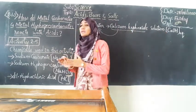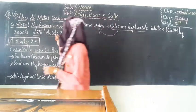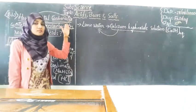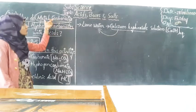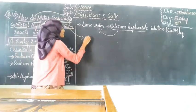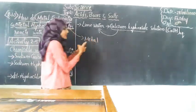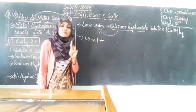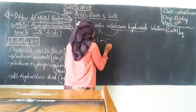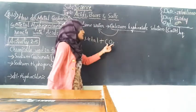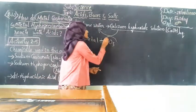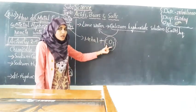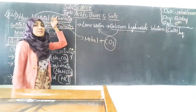Before conducting the activity, we must know what is meant by metal carbonates and metal hydrogen carbonates. You can understand these through their names. Metal carbonate means any metal combined with carbonate. Carbonate is a mixture of carbon and oxygen — that is CO3. So any metal that combines with CO3 is considered a metal carbonate.